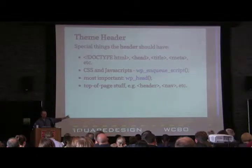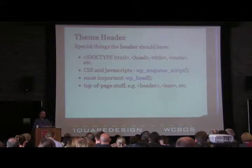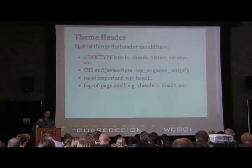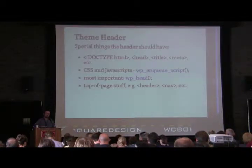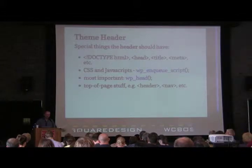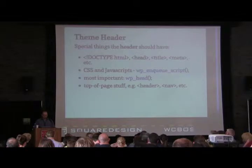I skipped wp_enqueue_script — that WordPress function is actually the preferred method for adding JavaScript to your site, because it will output it in wp_head and won't load things twice. So if two different plugins need jQuery and they all use wp_enqueue_script, you're only going to get one copy of jQuery instead of three, which is good because jQuery is pretty big.